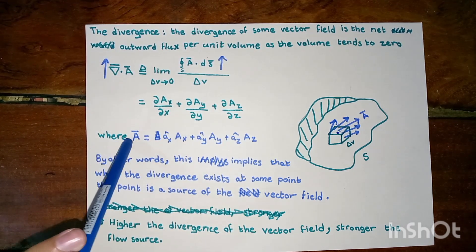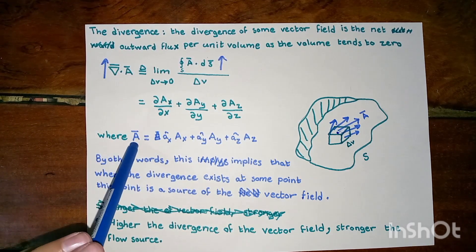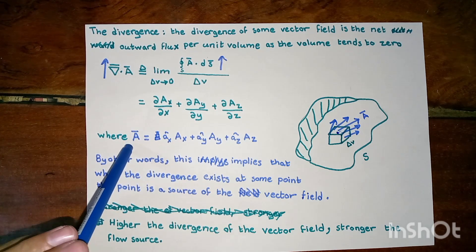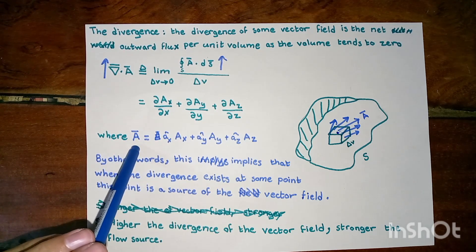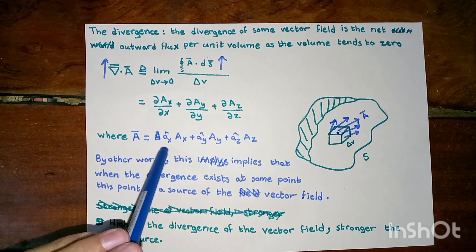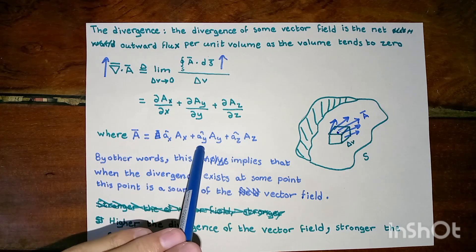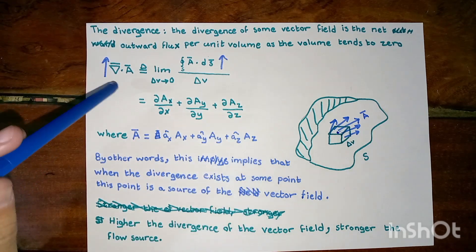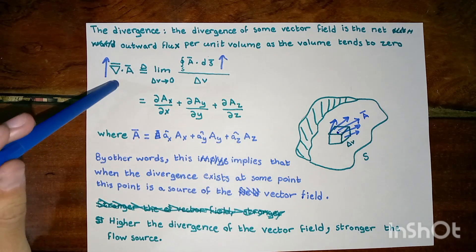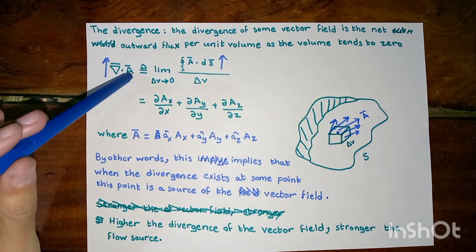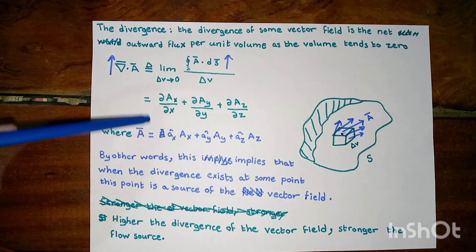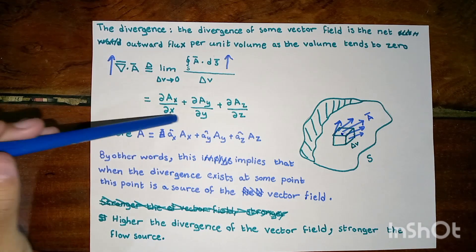The vector A is the vector assumed by us. It has components at x, y, and z directions. When we make a dot product between the del operator and A, we will end up with this summation.